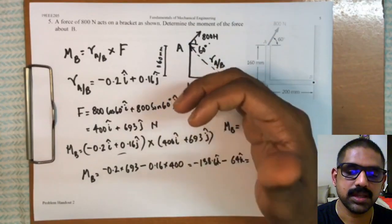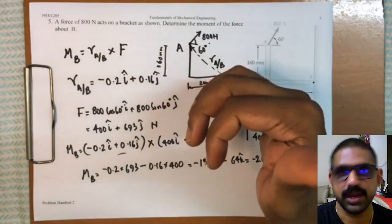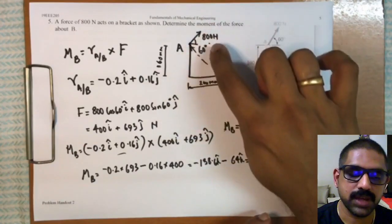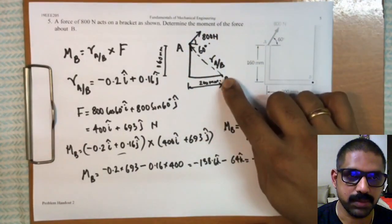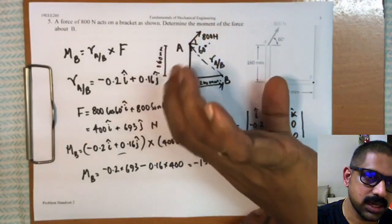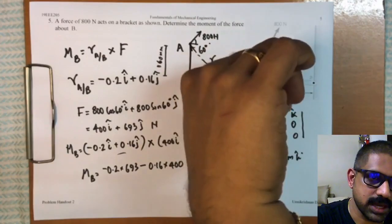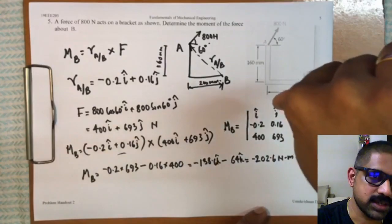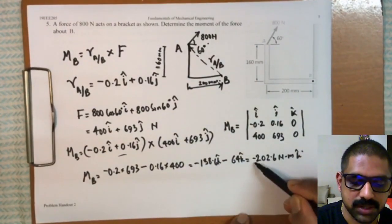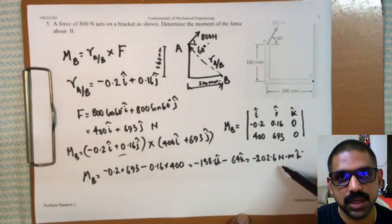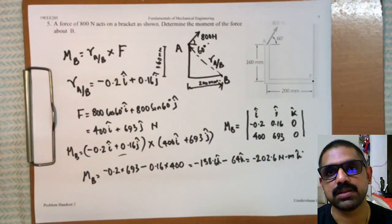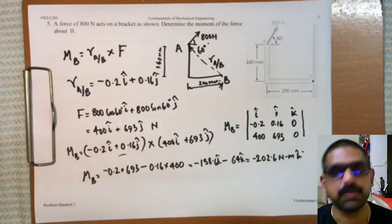To confirm the sense of the moment vector, we use the right-hand thumb rule. If you curl your fingers in the direction the force tends to rotate the body, the thumb points in the direction of the moment vector. Here, the 800 N force applied with respect to point B has a clockwise curling effect, so the thumb points downward — justifying the negative sign of minus 202.6 N·m. This is how we find the moment of a force about a point.